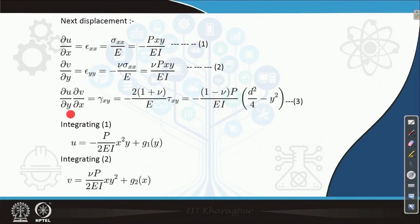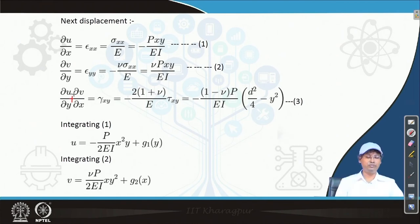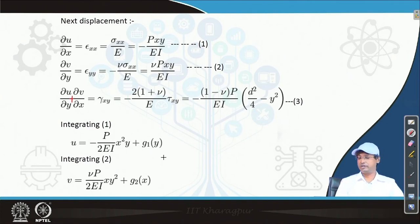One typographical correction: a symbol that appeared as multiplication is actually a plus sign — please note that correction. We will use the expressions for u and v, substitute these values into equation 3, and proceed further.